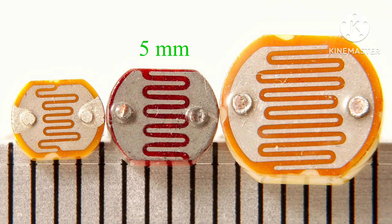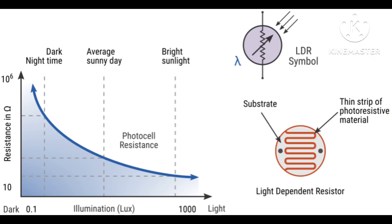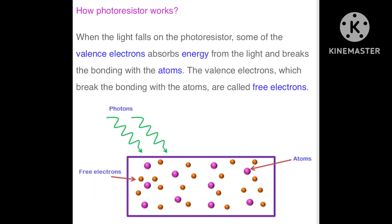Here is the graphical representation of resistance and luminance. You can see with respect to increased light, resistance decreases and vice versa. This is the symbol for LDR.